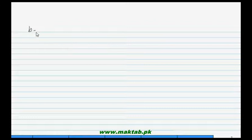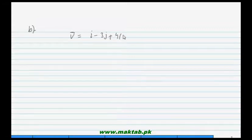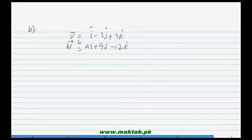In part B, question number 10: find the constant a so that the vectors v and w are parallel. We have two vectors given — v vector equals i minus 3j plus 4k, and w vector equals ai plus 9j minus 12k.